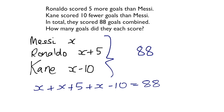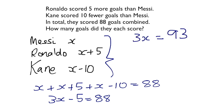Let's tidy up the equation. There are three X's, and plus 5 minus 10 is minus 5, so 3X minus 5 equals 88. Add 5 to both sides: 3X equals 93. Divide both sides by 3: X equals 31. So Lionel Messi scored 31 goals, Ronaldo scored five more so he scored 36, and Kane scored 10 fewer than Messi so he scored 21.